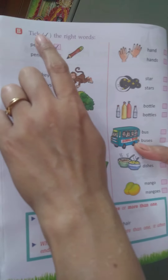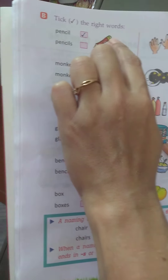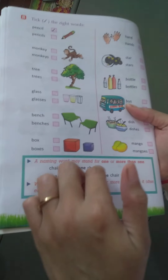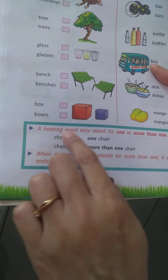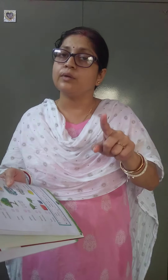After that, you have done all these things. Like pencil, pencils. Take the right words — one pencil is there, one pencil. Naming words also: they are telling naming words may stand for one or more than one. That's why we are doing singular or plural. One thing — that is singular. And more than one — we are calling plural.